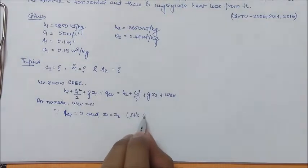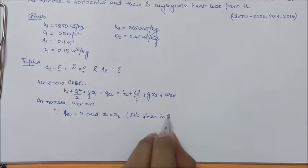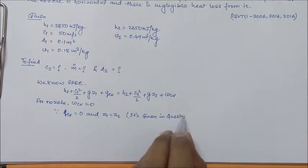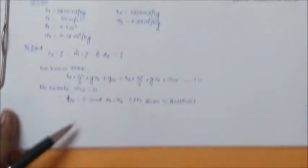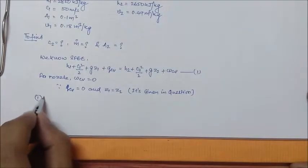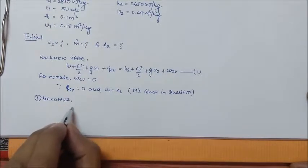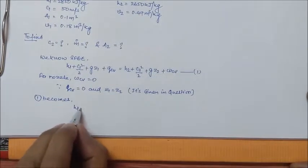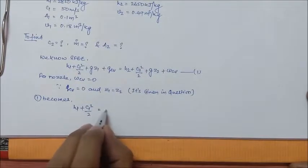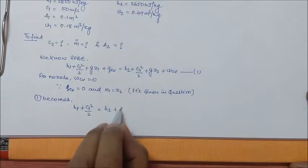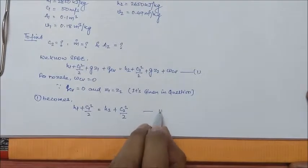For nozzle, WCV is zero, QCV is zero, and Z1 equal to Z2. So equation 1 becomes H1 plus C1 square by 2 equal to H2 plus C2 square by 2. Put this as equation 2.